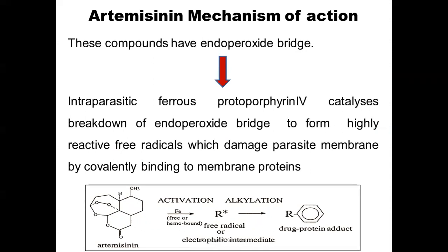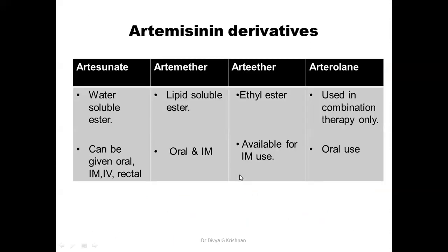The mechanism of action of artemisinin derivatives is not very clear, but the proposed mechanism is as follows. These compounds have an endoperoxide bridge in their structure, which is broken down by the intraparasitic ferrous protoporphyrin IX. Because of the breakage of this endoperoxide bridge, highly reactive free radicals are formed which damage the parasite membrane by covalently binding to the membrane proteins.